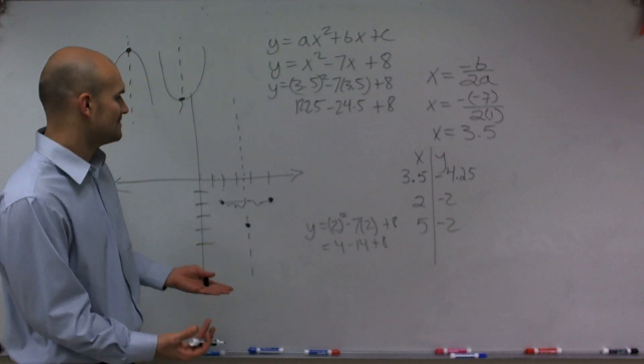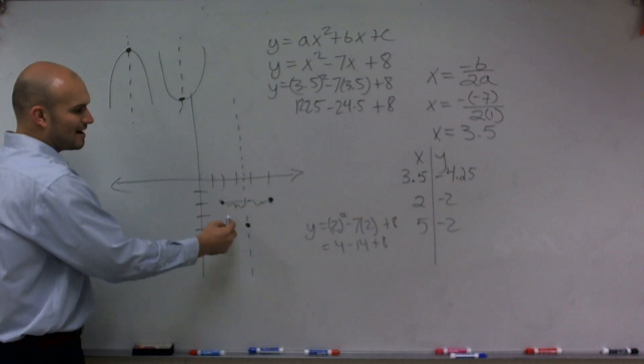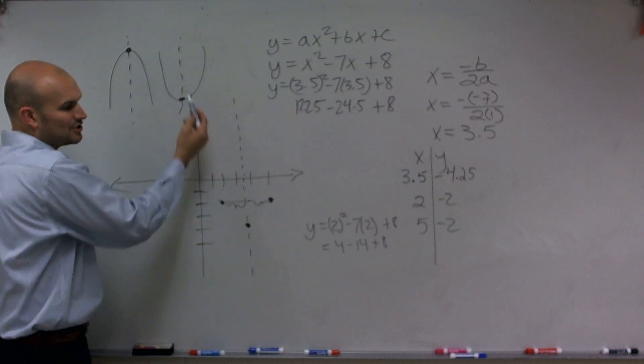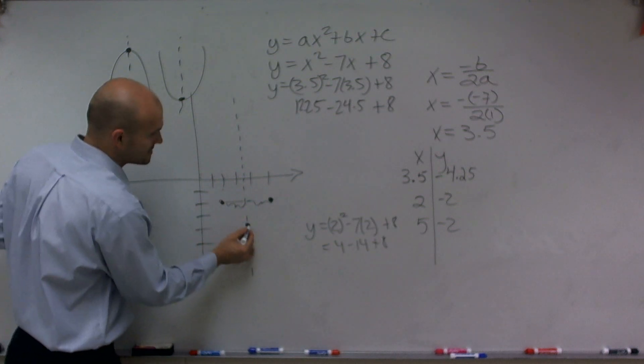So now I need to determine, how does this graph going to look? Well, remember, it's a U-shaped graph. So my graph is definitely going to continue going upwards. So this vertex ends up being the low point of my graph.